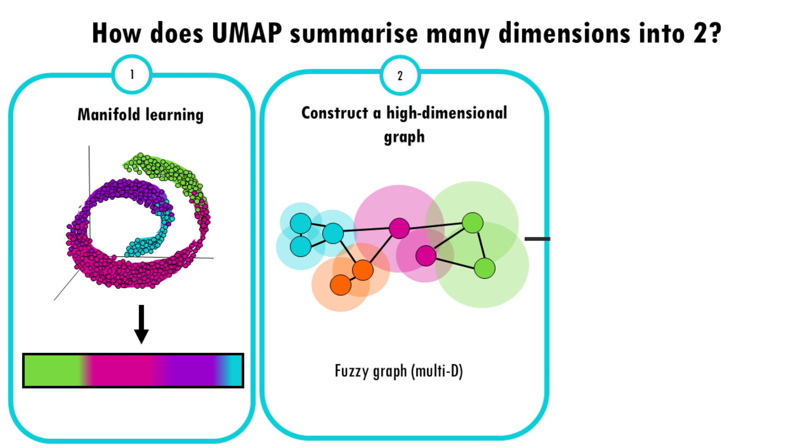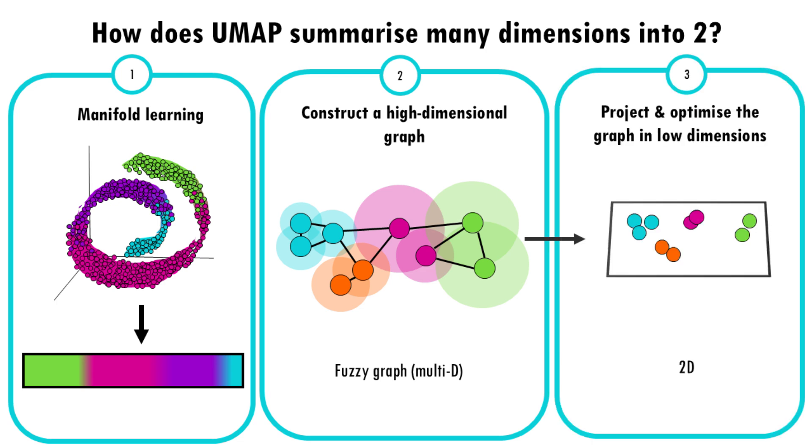Okay, but this fuzzy graph is still highly dimensional. We need to bring it down to 2D. So UMAP will optimize the graph into lower dimensions. Again, like TSNE, there's an optimization step where UMAP optimizes the layout of a 2D graph, trying to keep the connections it computed in the multi-D fuzzy graph as closely as possible.